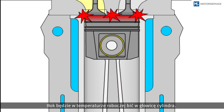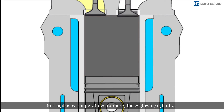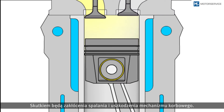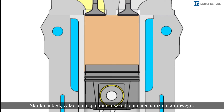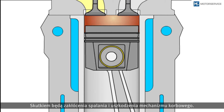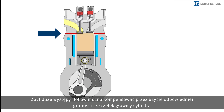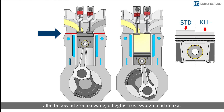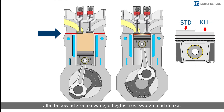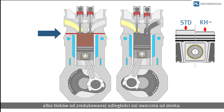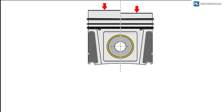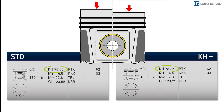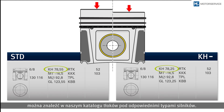If the piston protrusion is too large, the piston bumps against the cylinder head once it has reached operating temperature. This results in combustion errors and damage to the crank mechanism. Excessive piston protrusions can be corrected by means of cylinder head gaskets of the appropriate thickness, or by using pistons with reduced compression height.